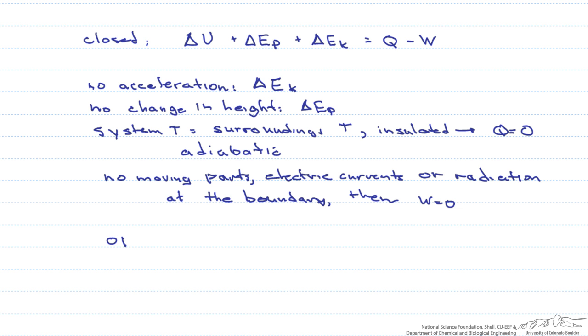The governing equation for an open system is almost the exact same equation with two important differences. The first one is that we have delta H instead of delta U, and delta H is the change in enthalpy. And secondly, there is flow in this system, so these are per unit time. And again, we have the same kind of simplifications as we did in the closed system.